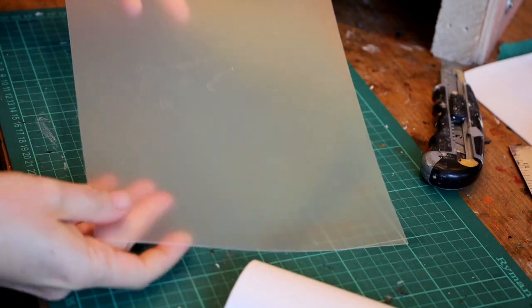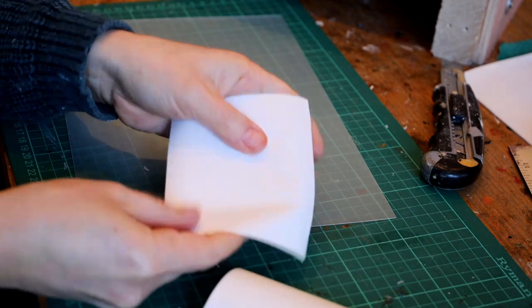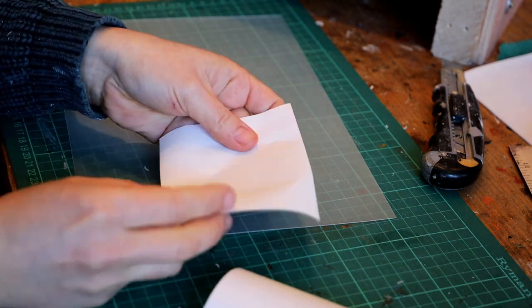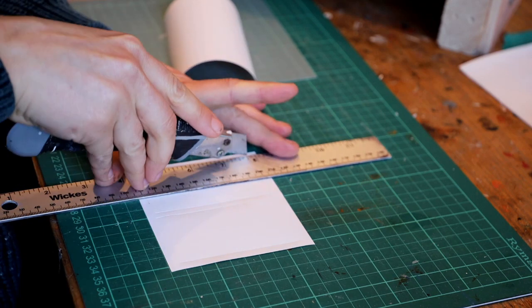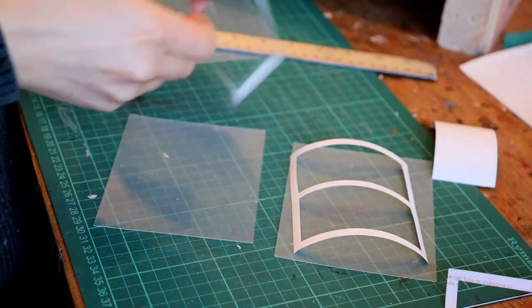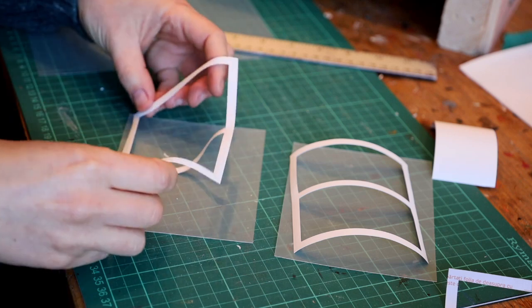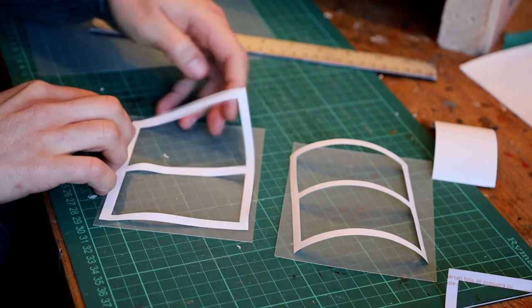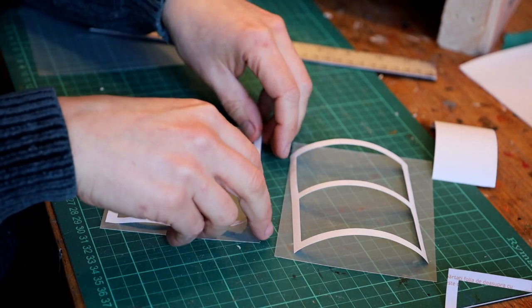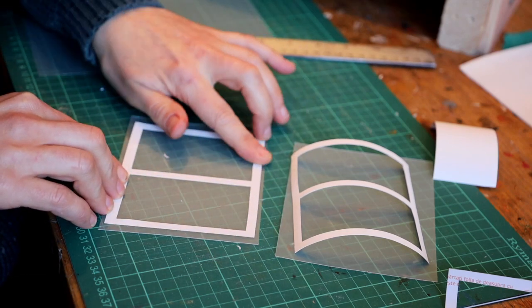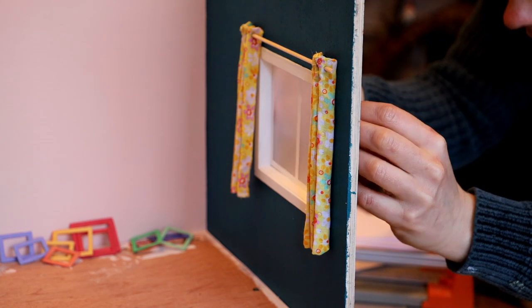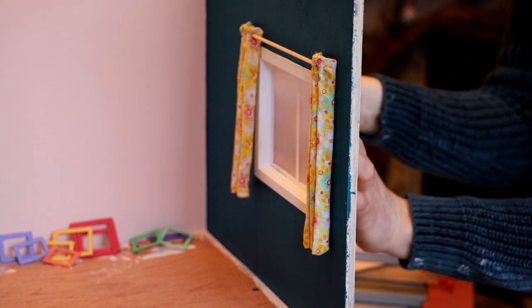For the windows I've used some polypropylene sheets and some self-adhesive film. I've cut the film to size and cut the frame out. Then I pressed the white film against the polypropylene sheets, and finally placed it inside the opening and used some clear tape to hold it in place.